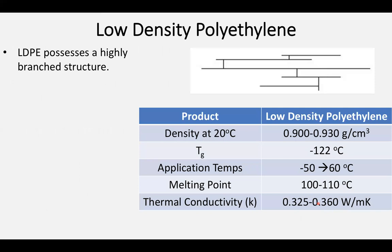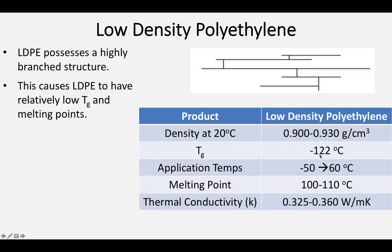The real big difference between low density and high density polyethylene is going to be the extent of this branching. Low density tends to have a very highly branched structure. Because it's so highly branched, it's much harder to pack the polymer chains close together. As a result, it tends to have fairly low glass transition points — below negative 122°C — and also a very low melting point, often around 100°C, depending on the exact structure and impurities.